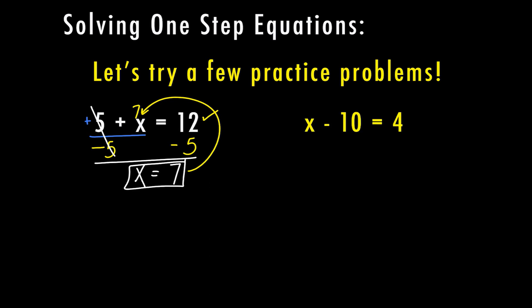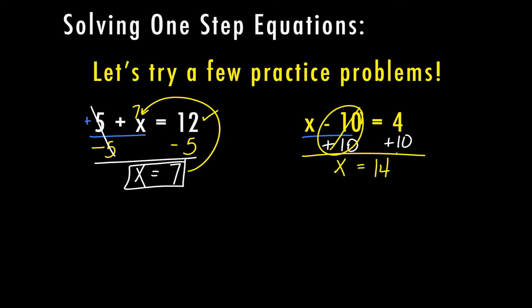For our next example, we have x minus 10 equals 4. Let's identify what's happening on the same side as the variable — in this case, minus 10. So I'm going to add 10, which is the opposite, to both sides. Negative 10 plus 10 is 0, so I have x left on the left. Then 4 plus 10 is 14, so x equals 14. Plugging 14 back into the original problem: 14 minus 10 equals 4 — that one checks out as well.